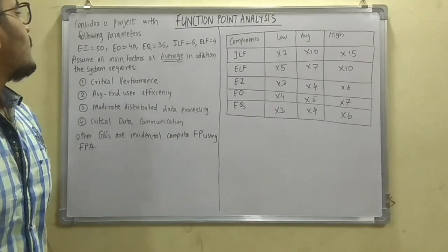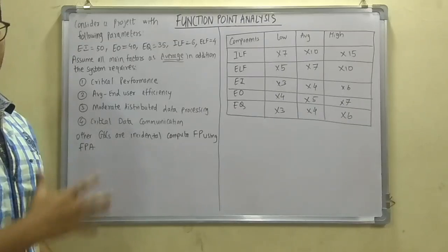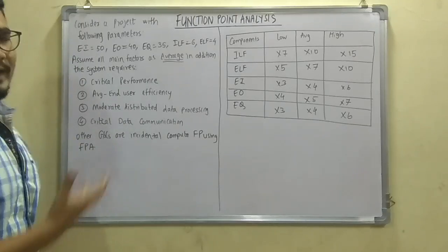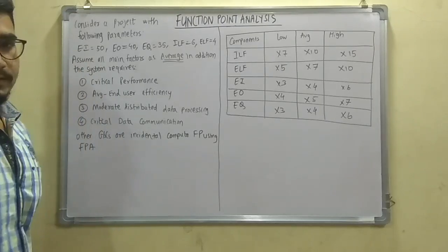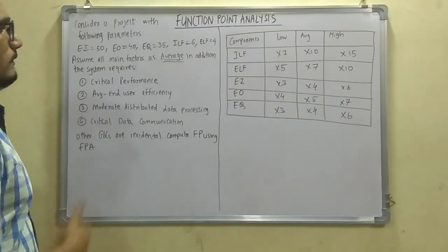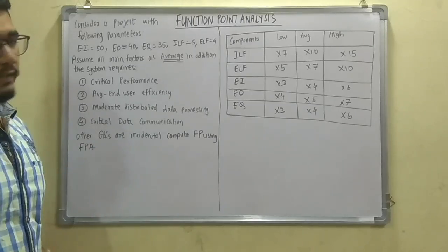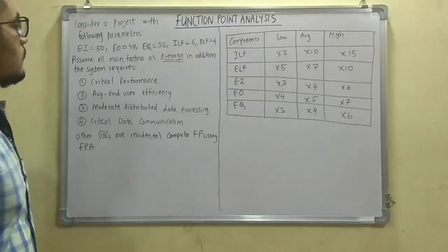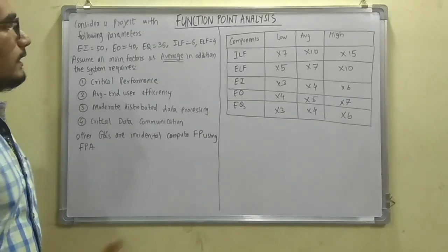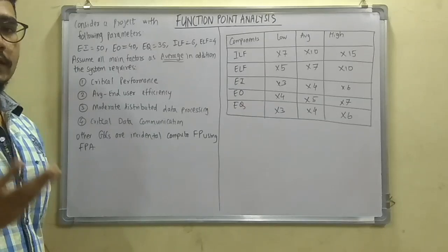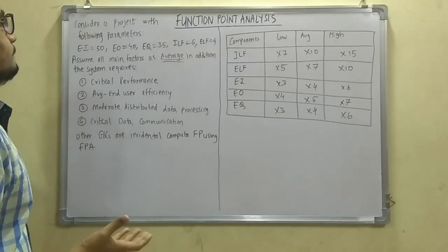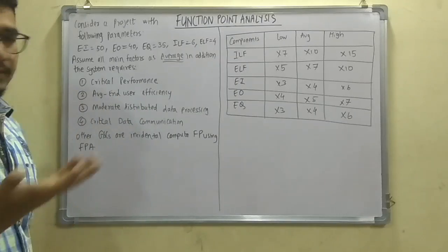So first we have the problem: consider a project with the following parameters. The following parameters I have given are EI, EO, EQ, ILF, and ELF. Some values are there. So the values are 50, 40, 35, 6, and 4.